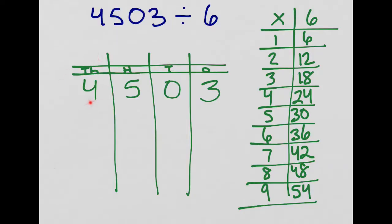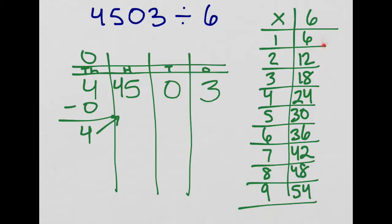Now we're ready to divide. Starting in the thousands place, I have four thousands. Since I'm dividing by six, I don't have enough to make one group — I would need six — so I'm going to put a zero. I didn't make any groups, I didn't use any, and I still have four left. I take my leftovers and move them next door. Now I'm looking at the number 45. Looking down my table of multiples, I want the number closest without going over. I can make seven groups, and that would use up 42 pieces, leaving me with three.